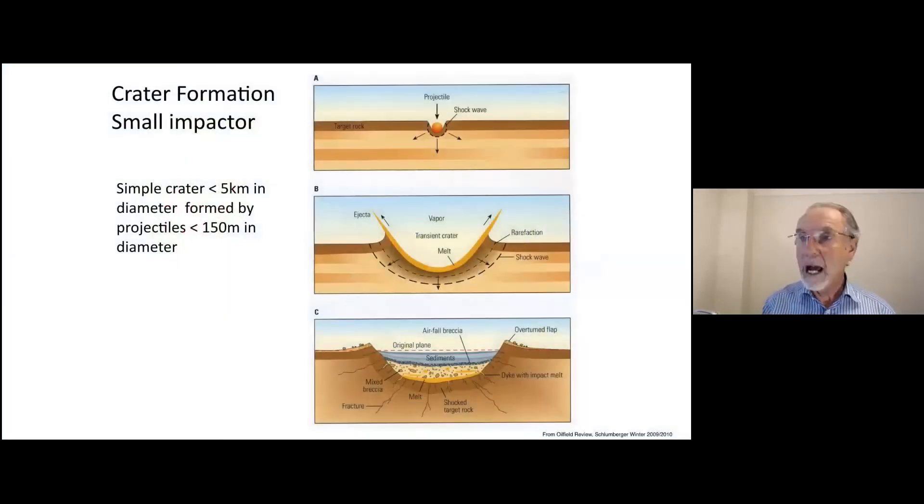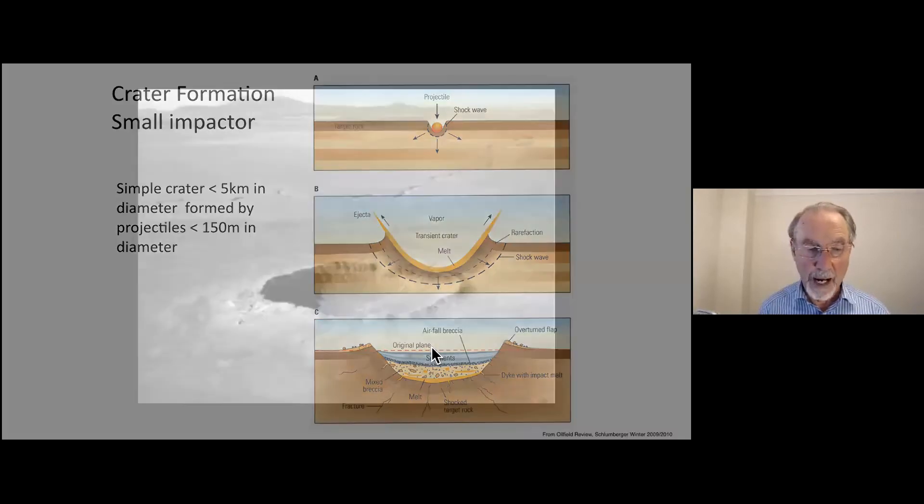Now, for small impactors, less than 30 meters in diameter, they explode in the air, so there's no crater. From about 50 to 150 meters in diameter, they have what's called a simple crater, as we see in this sequence here, the melted ejecta, and then the fallback of the rock, and then the infill afterwards. So simple craters for objects up to 150 meters, craters up to five kilometers. And the Barringer crater in Arizona is about 1.2 kilometers, and we think is 50,000 years old.